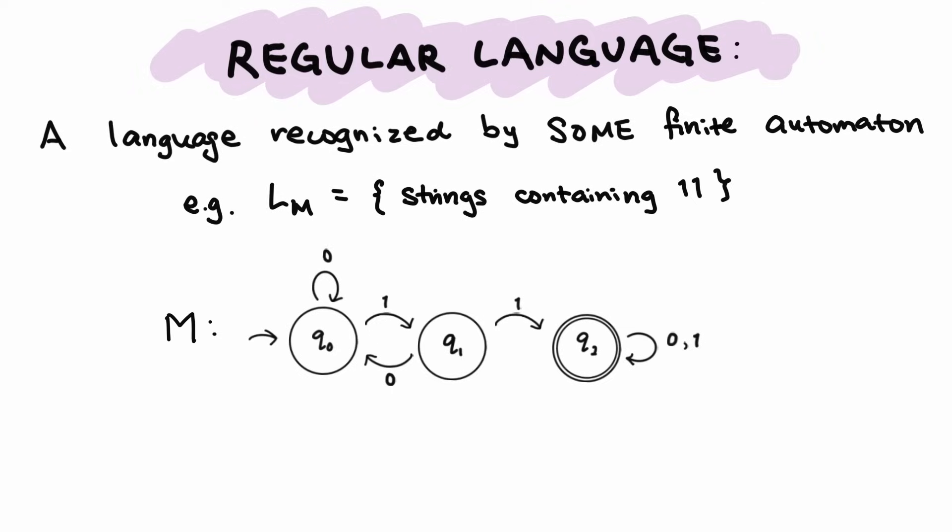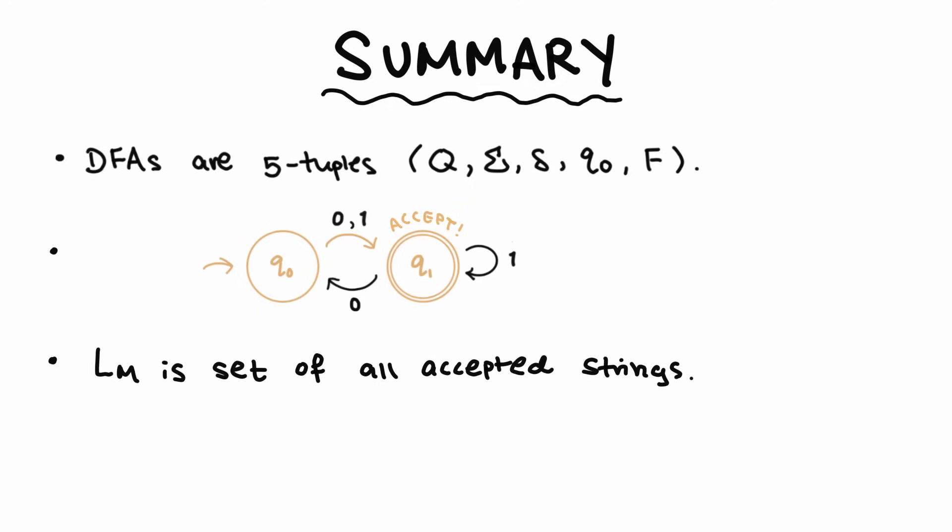Now that was quite a bit of information, so let's just summarize what was said in this video. 1. DFAs are 5-tuples that can be represented with state diagrams. 2. If the last symbol of an input string causes the machine to be in an accept state, then the machine accepts the string. 3. The language of a machine is the set of all strings it accepts. And finally, a language recognized by some finite automaton is called a regular language.